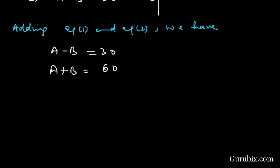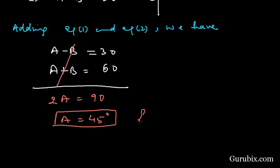If we add them, minus B and plus B will be cancelled. Here we have 2A equals 90°. This means A equals 45°.